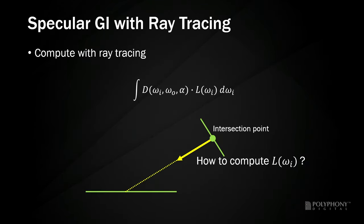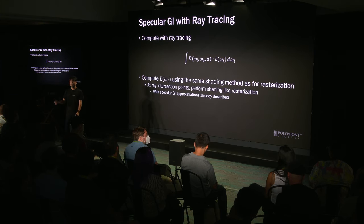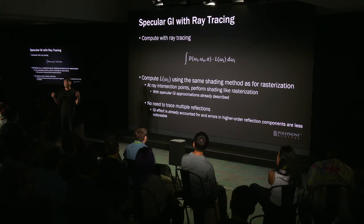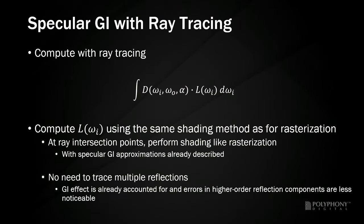The integration is now calculated using ray tracing. The problem is how to compute the radiance L from the intersection point. To compute the radiance, we approximate it with the same shading method used for rasterization. At the intersection points, we do shading like rasterization instead of recursively ray tracing. Of course, the accuracy will be lower, but a certain amount of GI effect is already accounted for, and errors in higher-order reflection components are less noticeable. Therefore, only one ray tracing step is performed.